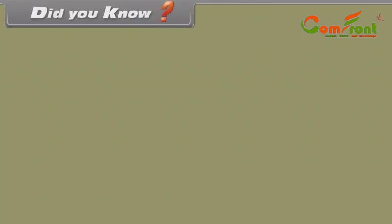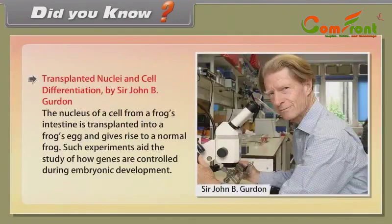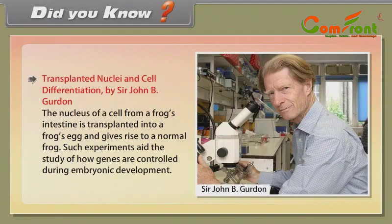Did You Know? Transplanted Nuclei and Cell Differentiation by Sir John B. Gurdon: The nucleus of a cell from a frog's intestine is transplanted into a frog's egg and gives rise to a normal frog. Such experiments aid the study of how genes are controlled during embryonic development.